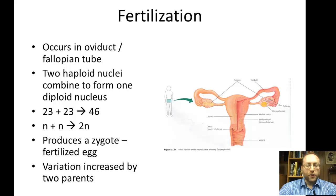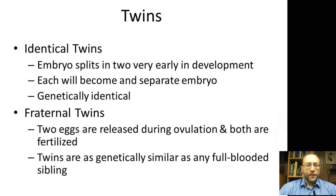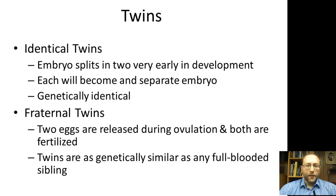Variation is also increased by there usually being two parents — a mother and a father — each with their own unique set of genes. For twins, there are two types. Identical twins come from one embryo where very early in development a couple of cells break off and develop into their own embryo, resulting in two genetically identical individuals. Fraternal twins occur when two eggs are released during ovulation, both get fertilized, and they're just as genetically similar as any full-blooded brother or sister — the only difference is they happen to be born at the same time.